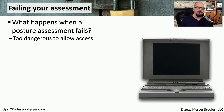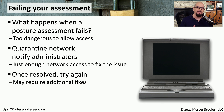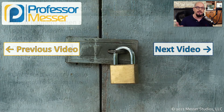Once the security team has configured the network access control system with the minimum configuration allowed on the network, it can begin evaluating the user's connection when they log in. It may be that a user is connecting to the network with a device that can't meet the minimum requirements for these posture assessments. In that case, the device is not allowed access to the network and is put into a quarantine network specifically built for devices that don't pass their health check. This gives the user a chance to install the software needed to update their system to meet the minimum requirements. Once the user feels they've fixed all the problems, they can try reconnecting to the network. The posture assessment will run again, and if all problems have been resolved, the user would then have access to the network.